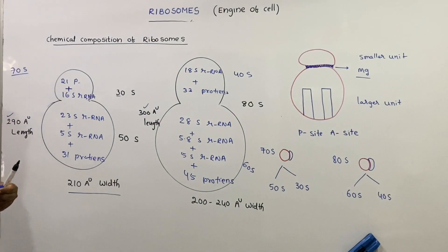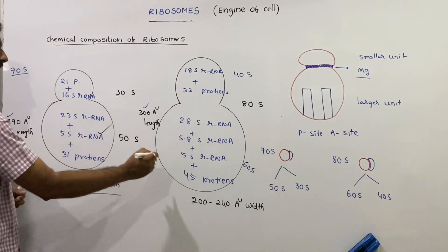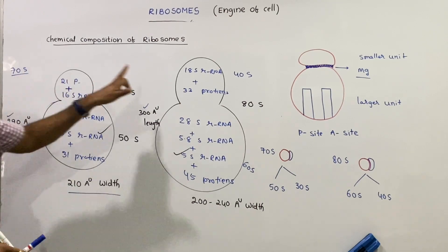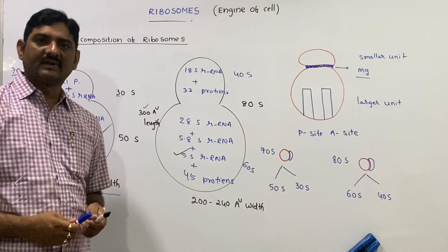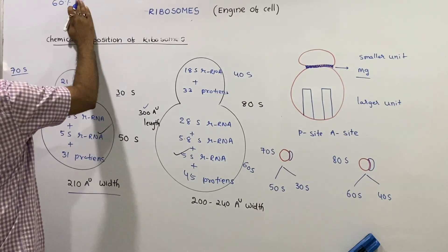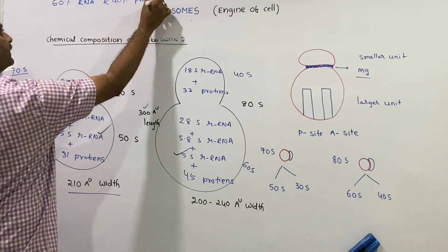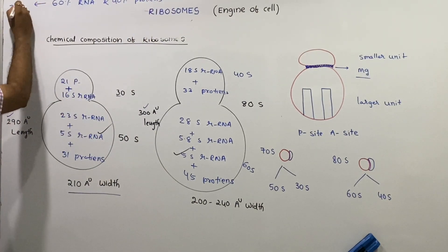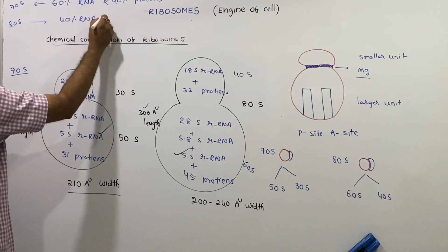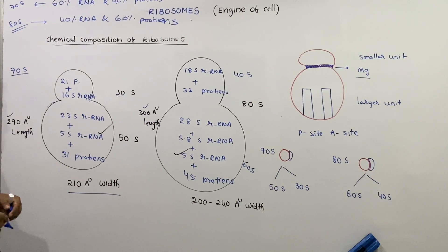The 5S rRNA is common to both 70S and 80S ribosomes. In 70S ribosomes, the composition is 60% RNA and 40% proteins. In 80S ribosomes, the composition is 40% RNA and 60% proteins.